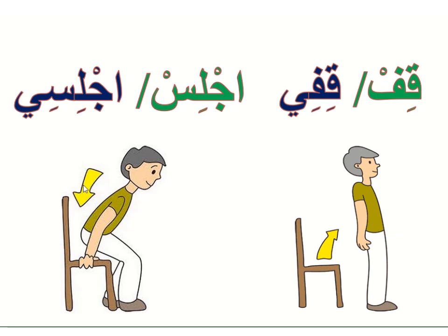Ijlis. Ijlis — this is sit down for boys. For girls, as we said, add 'ya' at the end, so it is Ijlisi. So we have: Qif for boys, Ijlis for boys. Qif means stand up, Ijlis means sit down for boys.